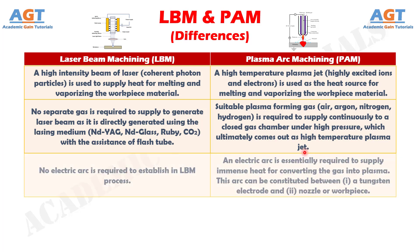Number 3: No electric arc is required to be established in the Laser Beam Machining process, whereas in Plasma Arc Machining, an electric arc is essentially required to supply immense heat for converting the gas into plasma. This arc can be constituted between a tungsten electrode and the nozzle or workpiece.